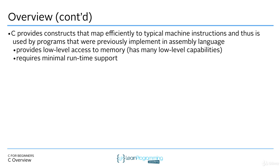C provides constructs that map efficiently to typical machine instructions. Because this mapping is so easy in C, it's often used by programs that were previously implemented in assembly language. It's also very easy to write operating system or embedded programs for this reason. It provides low-level access to memory and has many low-level capabilities — it can directly interact with hardware. A lot of drivers, which are programs that interact with hardware, are written in C. And it requires minimal runtime support because it easily maps to assembly instructions.